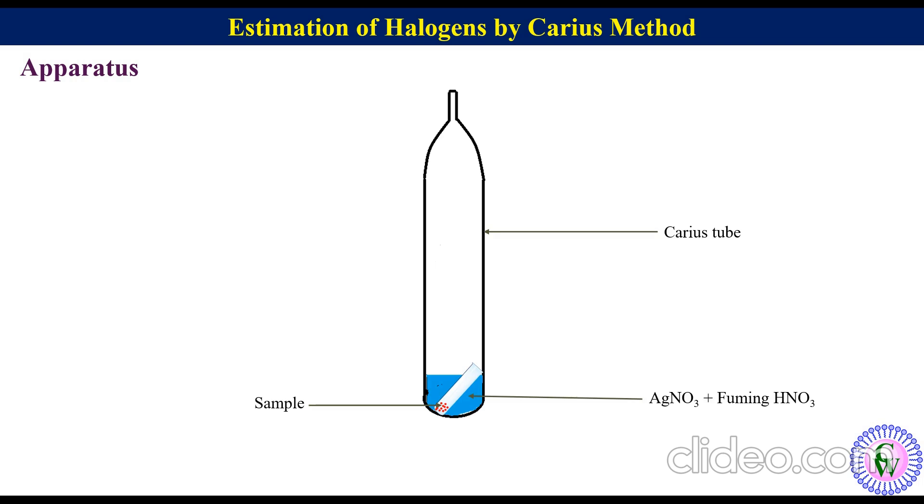The Carius tube is kept inside an iron jacket. The Carius tube with iron jacket is kept inside a furnace.